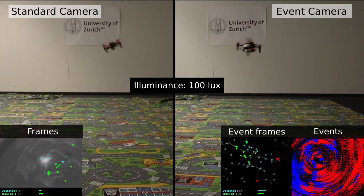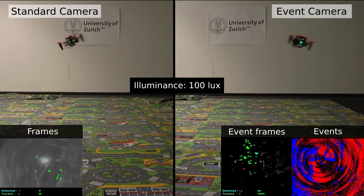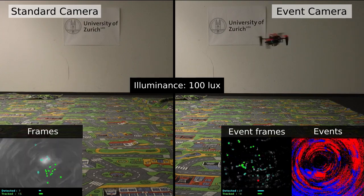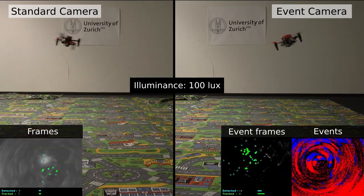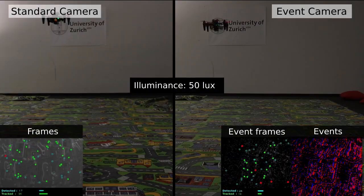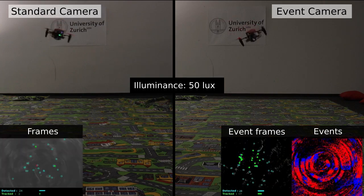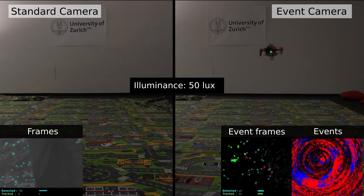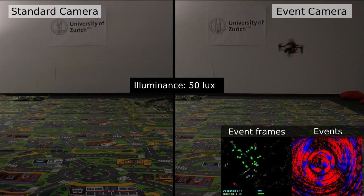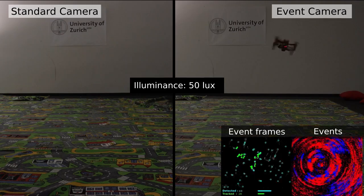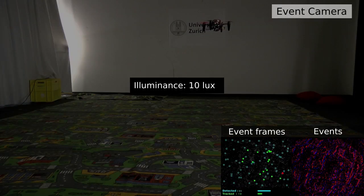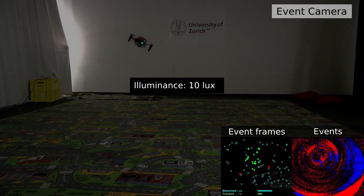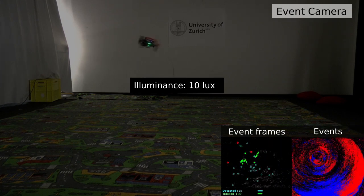As we gradually decrease the environment illuminance, the algorithm using a standard camera becomes less reliable due to significant motion blur, and the drone crashes when it's darker than 100 lux. By contrast, the event-based algorithm is still reliable even when the illuminance drops to 10 lux.